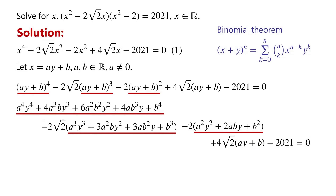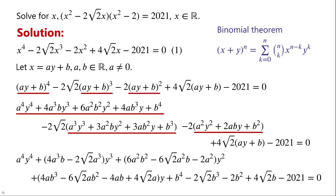Now by combining like terms, we have: a^4·y^4 + (4a³b − 2√2·a³)·y³ + (6a²b² − 6√2·a²b − 2a²)·y² + (4ab³ − 6√2·ab² − 4ab + 4√2·a)·y + (b^4 − 2√2·b³ − 2b² + 4√2·b − 2021) equals zero.